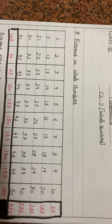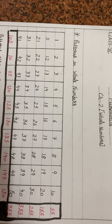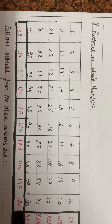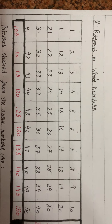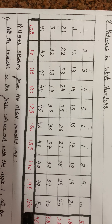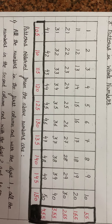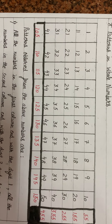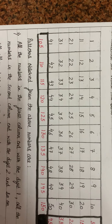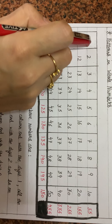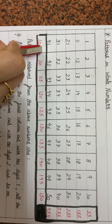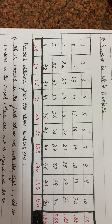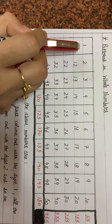Now we will understand patterns in whole numbers. We relate our daily life patterns to maths. I have made a grid with numbers from 1 to 50. You can pause the video for 2 minutes and see what patterns you can observe and how you can follow a sequence. Let me explain. There are rows and columns.